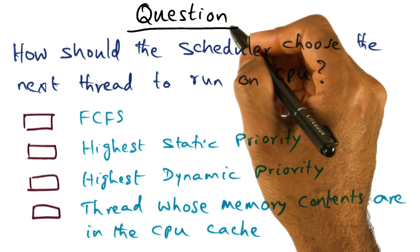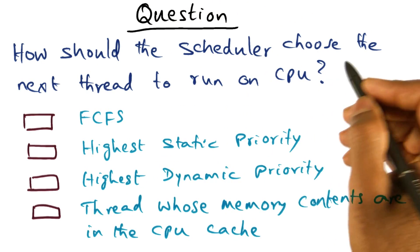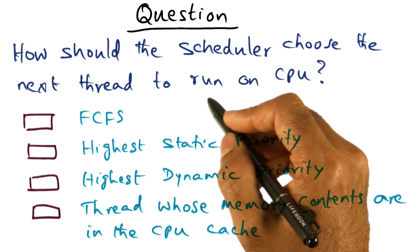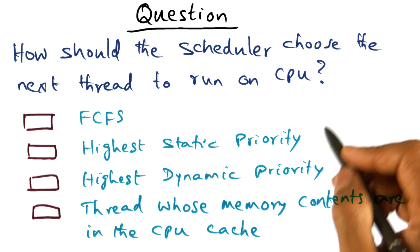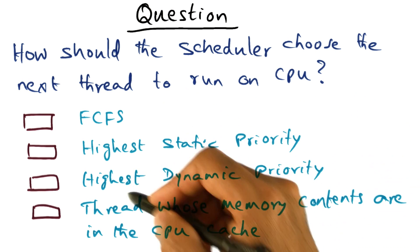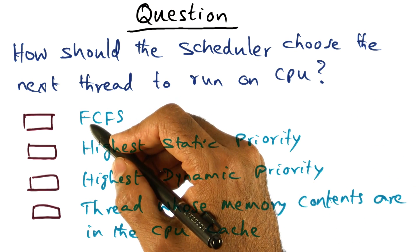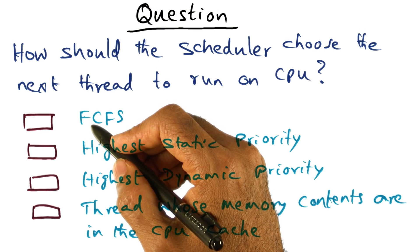Now, I'll turn that into a question for you. How should the scheduler choose the next thread to run on the CPU? I'm going to give you four different choices. The first is first come, first served.